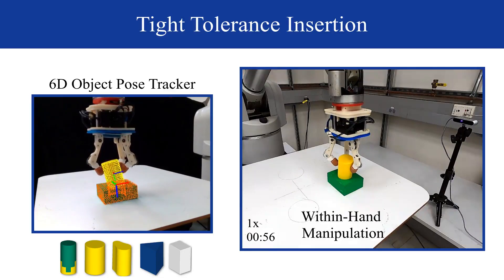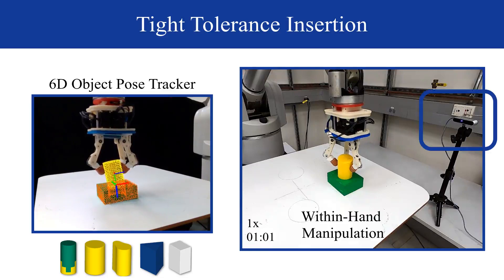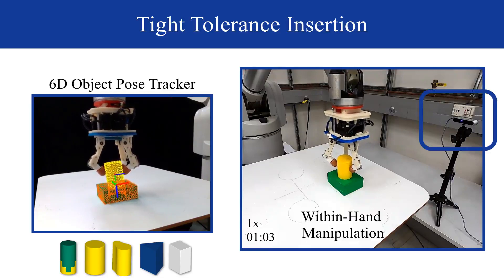During execution, the object tracker monitors in real-time the state of both the peg and the hole via an external RGBD camera until task completion.